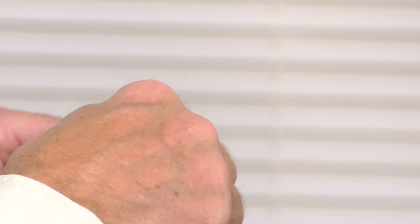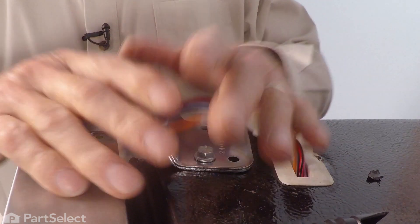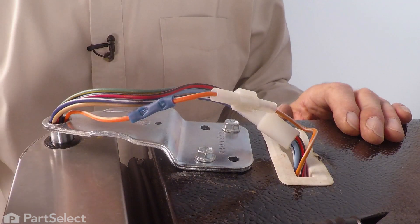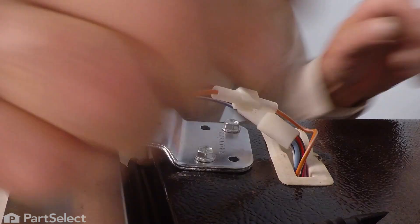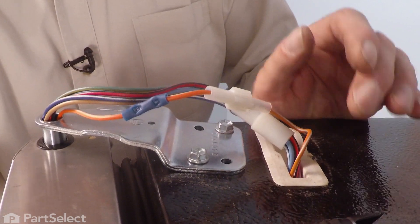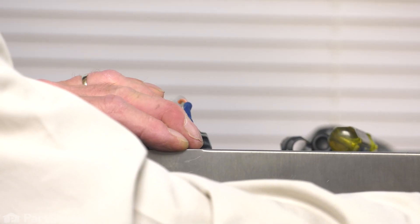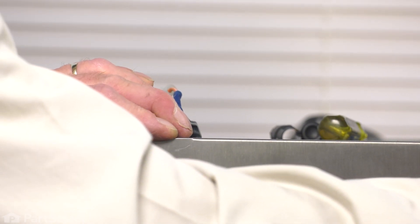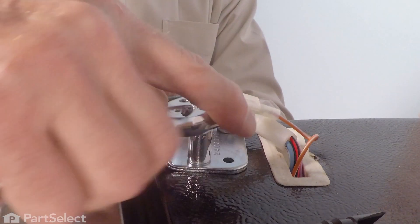Now we'll reconnect those wire harnesses. Make sure that the locking tab is engaging. Next, we want to make sure that we line that door up before we tighten those two hinge bolts. Just make sure we have an even gap between the refrigerator door and the freezer door from top to bottom. Then tighten those bolts securely.